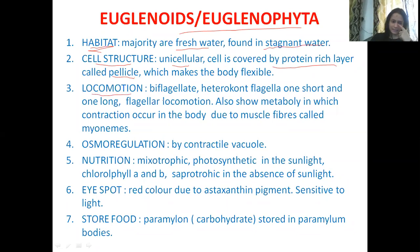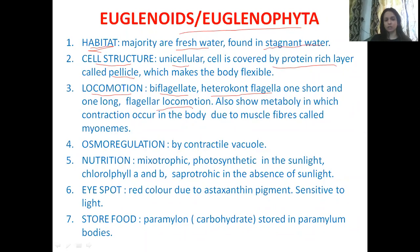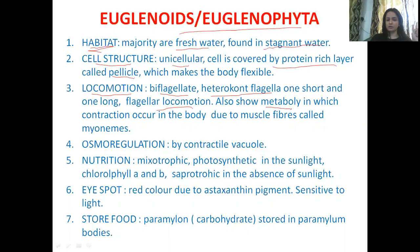Regarding locomotion, Euglena is biflagellate — it has two flagella. The condition is called heterokont, meaning one short and one long flagella — dissimilar in size. So the type of locomotion is flagellar locomotion. Beyond this, Euglenoids show another phenomenon.